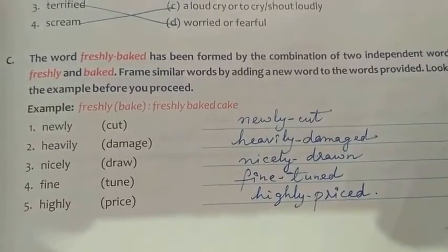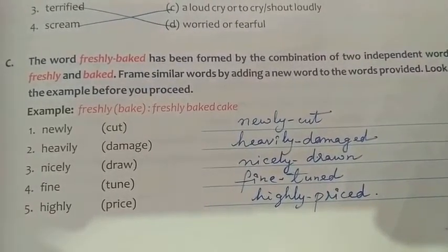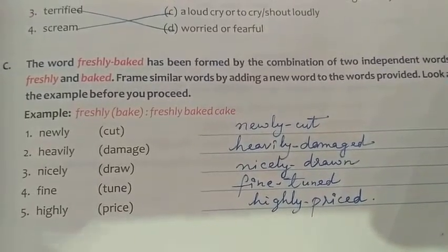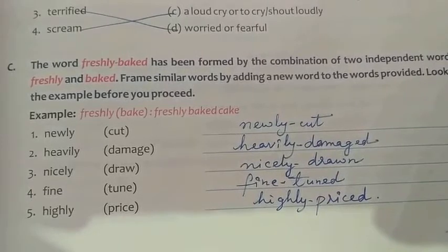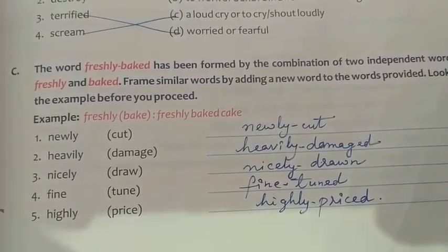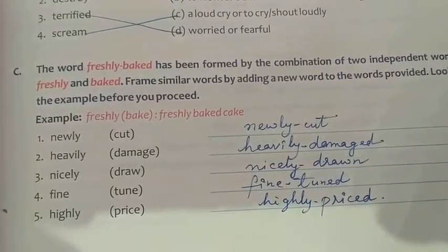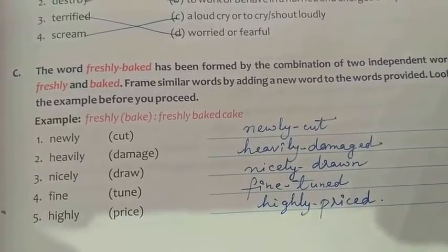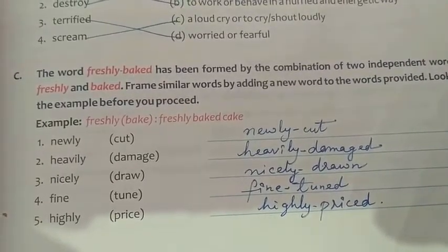Number two: heavily-damaged — D-A-M-A-G-E-D. Number three: nicely-drawn — D-R-A-W-N. Number four: fine-tuned — T-U-N-E-D. Number five: highly-priced — P-R-I-C-E-D.